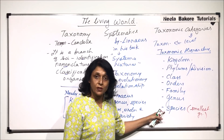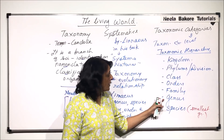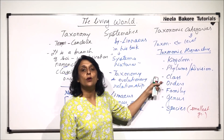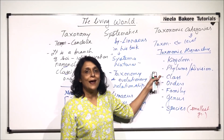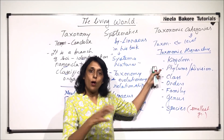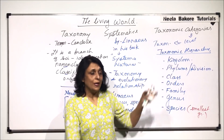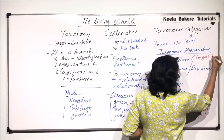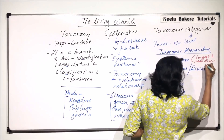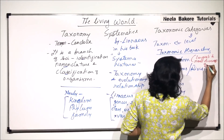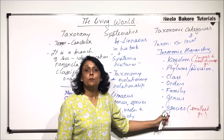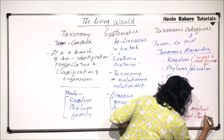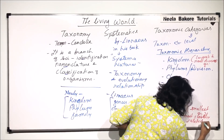Many similar species would be placed in one genus. Many similar genera would be placed in one family. Many similar families would go into an order. Many orders would go into a class. Many classes into a phylum. And all the phyla would come under the kingdom. So kingdom is the largest and most diverse group, whereas species is the smallest and most closely related organism group.